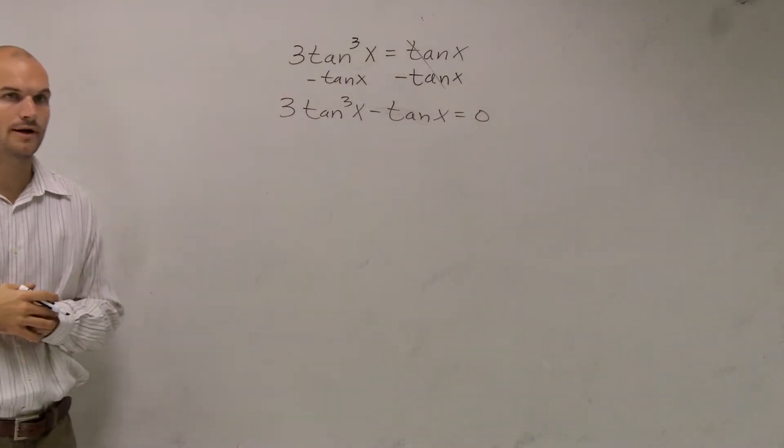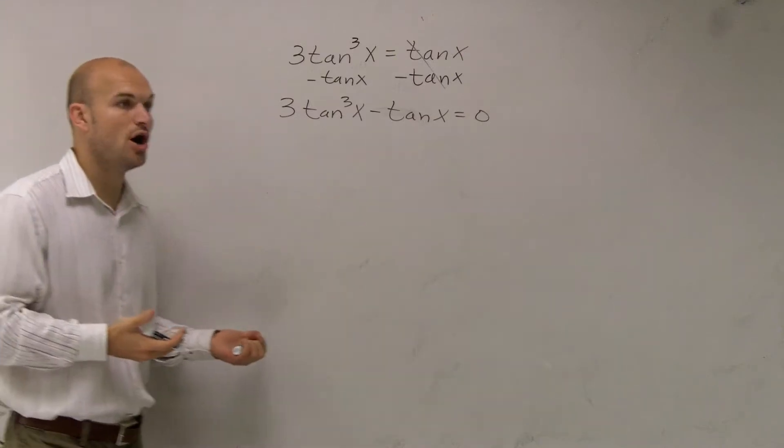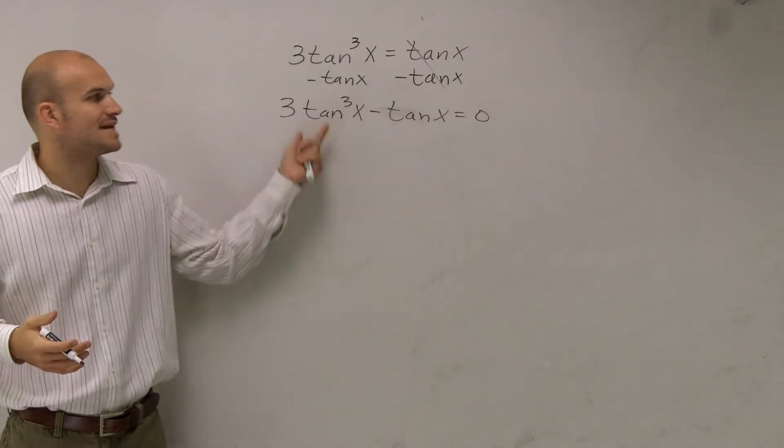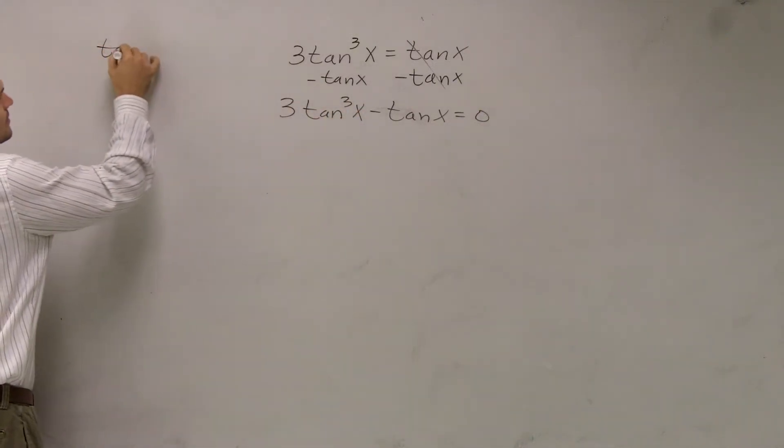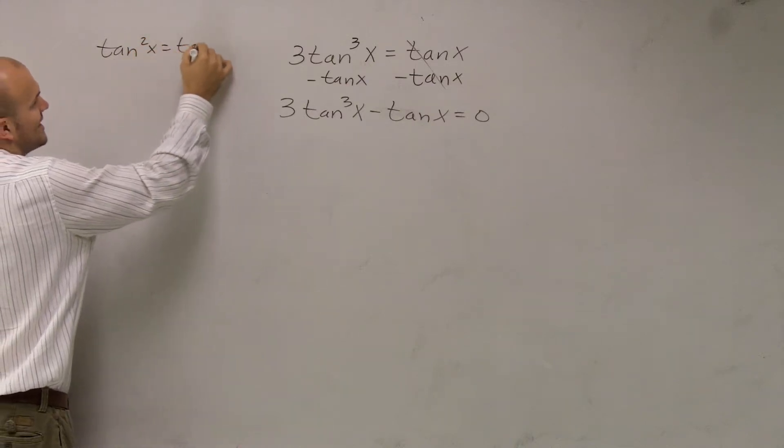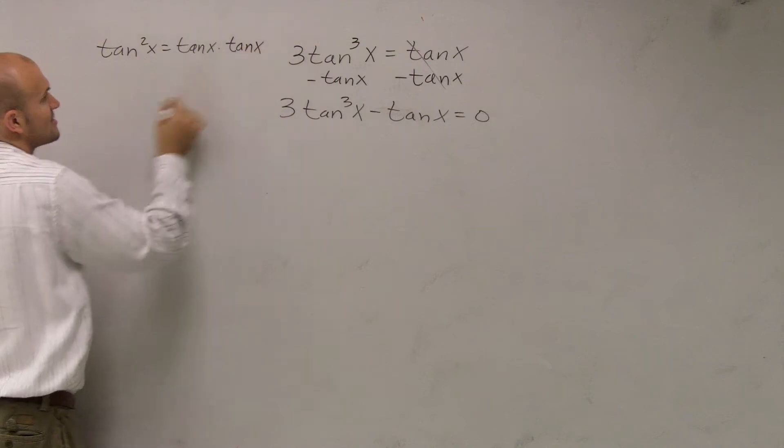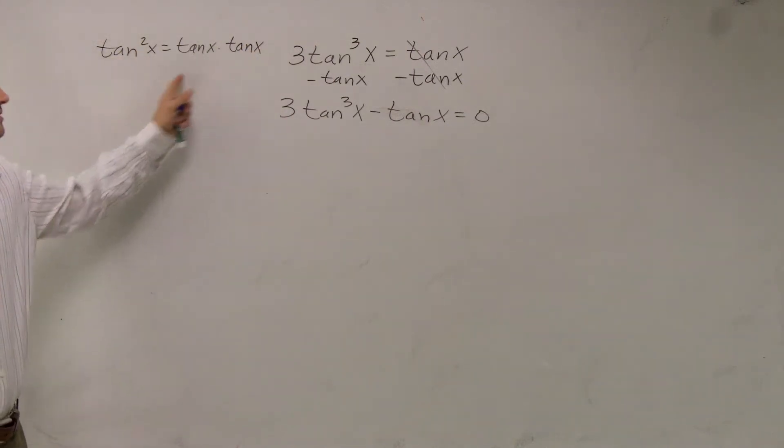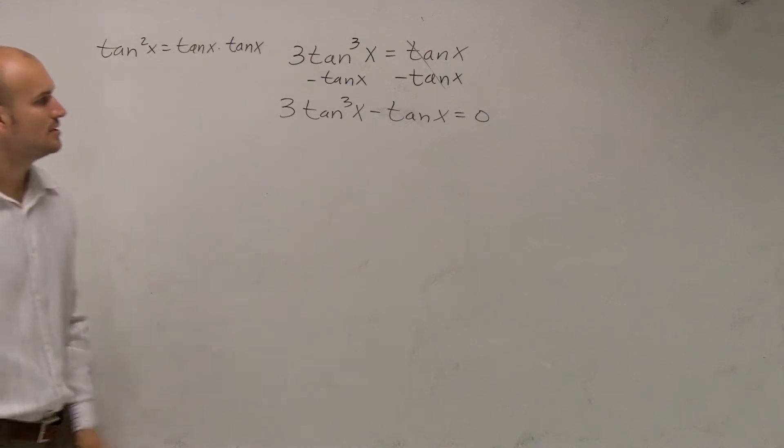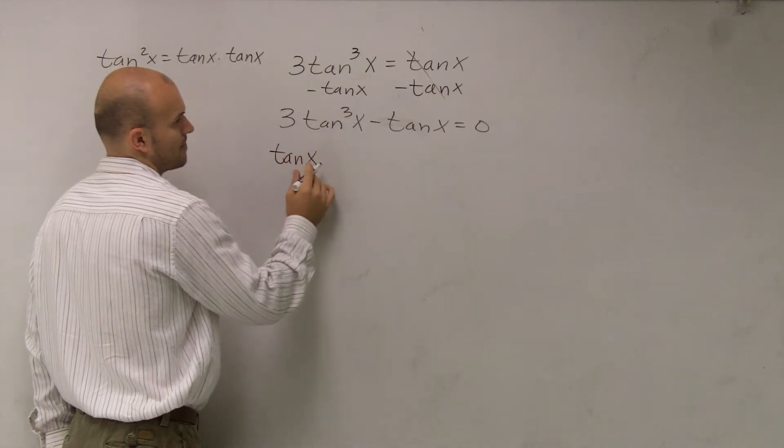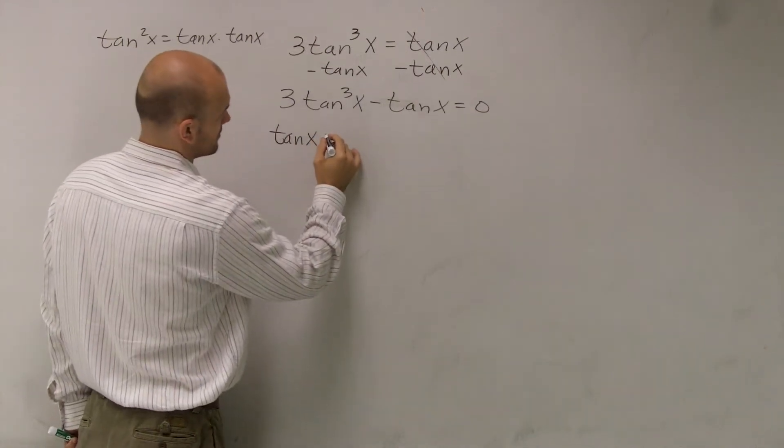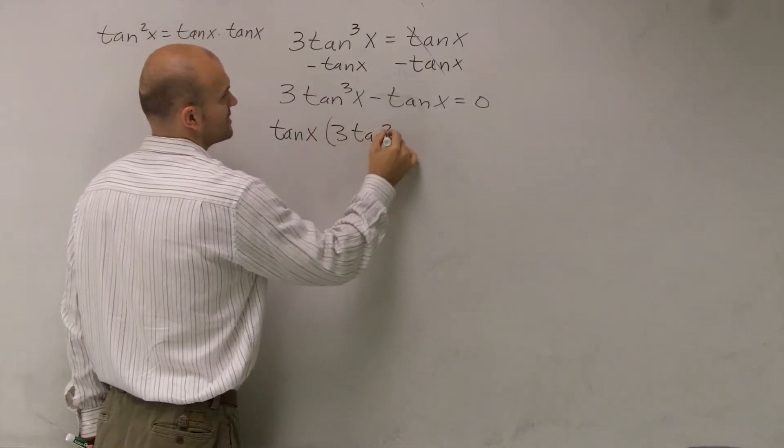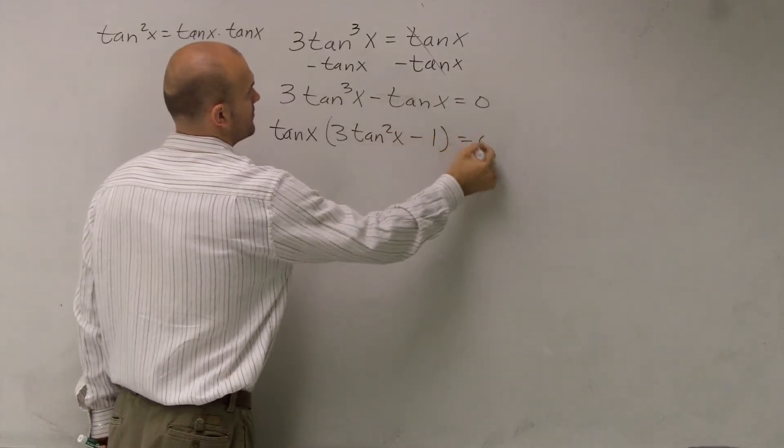So now when I'm looking into my solving, one thing I notice is they both share a tangent of x so I can factor that out. And all this tangent cubed of x means tangent squared of x equals tangent of x times tangent of x. So tangent cubed is going to just be another multiplied by tangent x again. So what I can do is I can factor out a tangent of x. So I factor out a tangent of x. I'm left with 3 tan squared of x minus 1 equals 0.